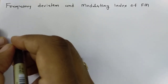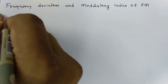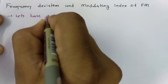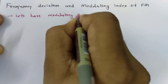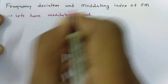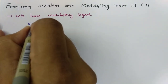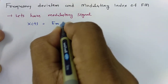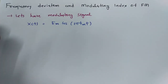Let us begin this session where first we will consider the modulating signal. The modulating signal Xt is equal to Em cos(2π fm t). This is our modulating signal.